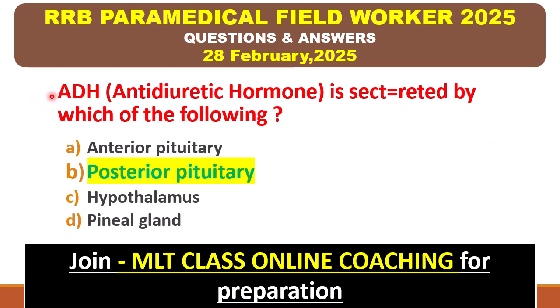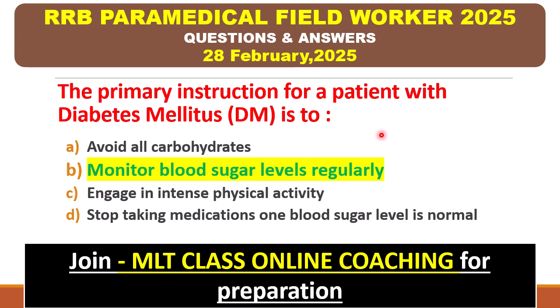ADH means anti-diuretic hormone — it is secreted by which gland? Anterior pituitary, posterior pituitary, hypothalamus, or pineal gland? The right answer is posterior pituitary. You can join our Telegram channel where this PDF is provided, and also join our WhatsApp channel for the latest notifications.